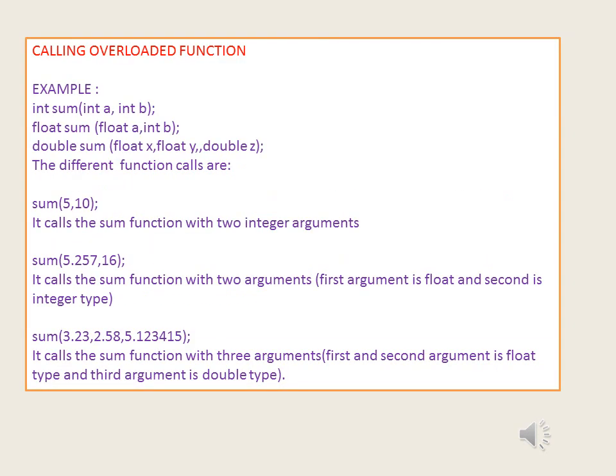Calling overloaded functions: overloaded functions are invoked just like other functions. The number and type of arguments determines which function should be invoked for a particular call. For example, sum(5.25, 7, 16) calls the sum function with two arguments — first is float type and second is integer. sum(3.23, 2.58, 5.123415) calls the sum function with three arguments — first and second are float type and third is double type.